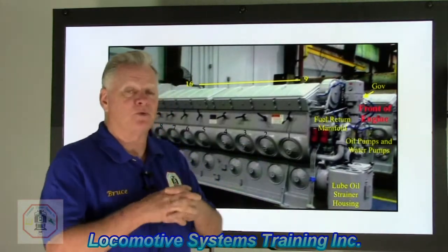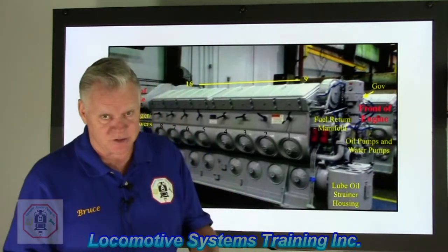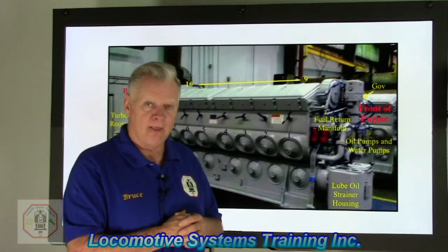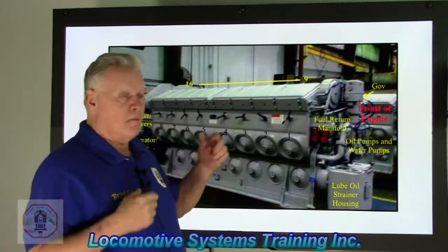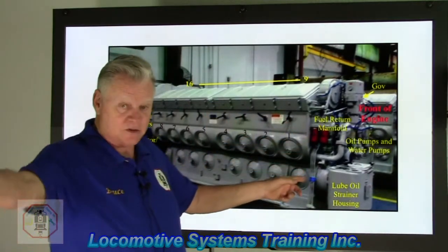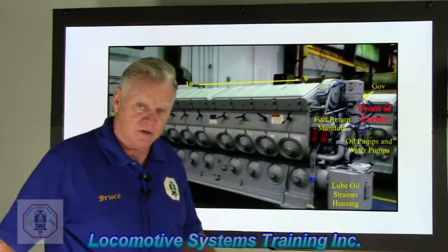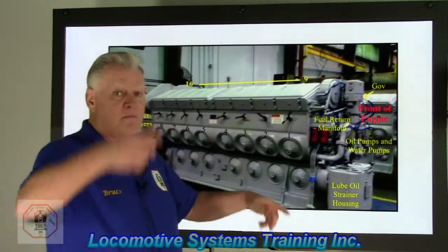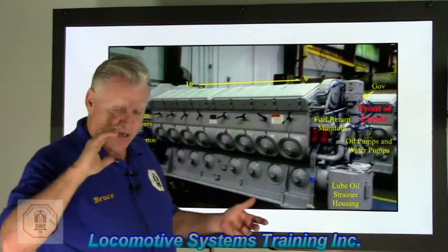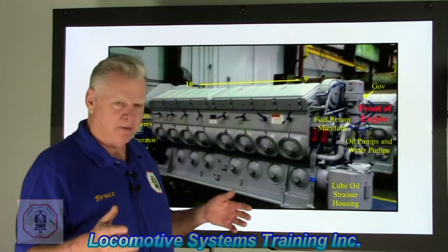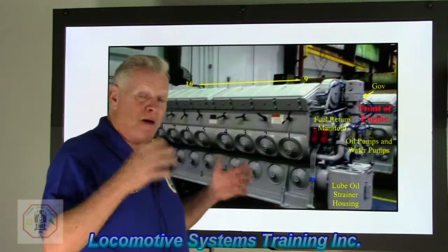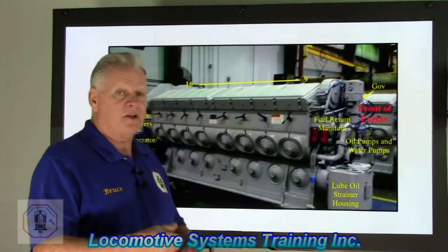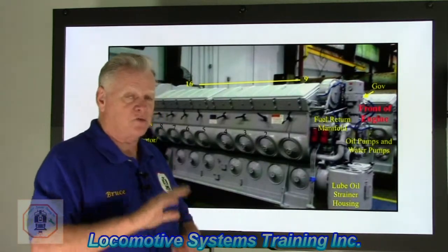Now let's talk about the problems we have with left and right between the car body and the diesel engine — this is where the confusion happens. Let's assume the letter F is on the short hood end of our locomotive. If I'm at the short hood end facing out, my left is to my left, my right is to my right, my front is out the short hood end, and my rear is facing the rear of the locomotive. Now, when we take this diesel engine and install it behind me, the engine is literally put in backwards. The back of the engine is facing the front of the locomotive. The left side of the diesel engine is on the right side of the locomotive. The right side of the diesel engine is on the left side of the car body. And the front of the engine is facing towards the rear of the car body.